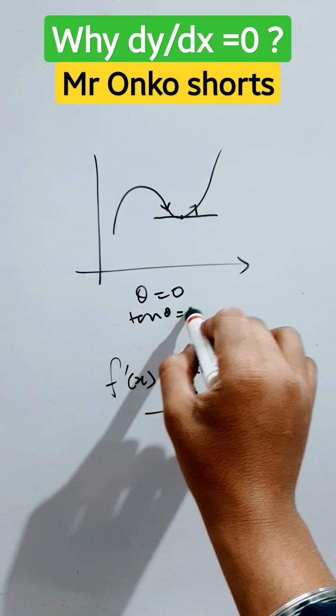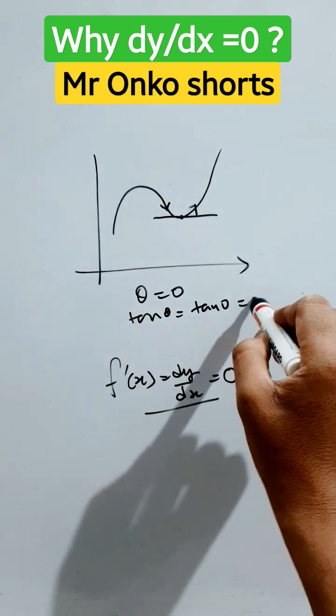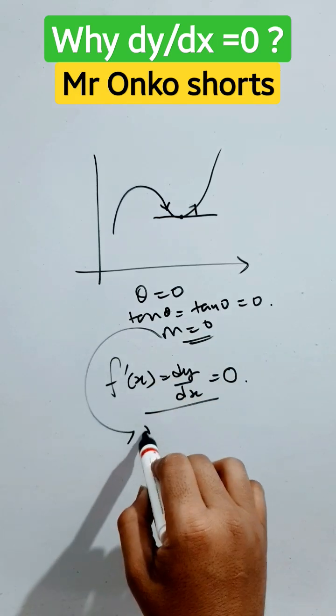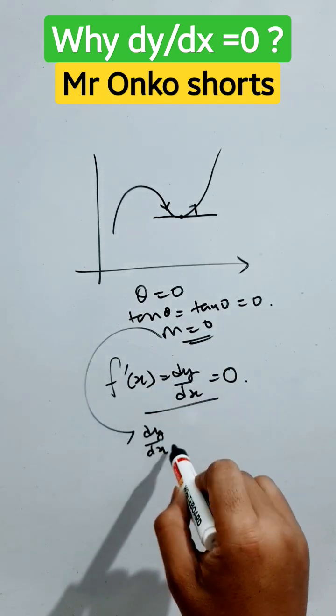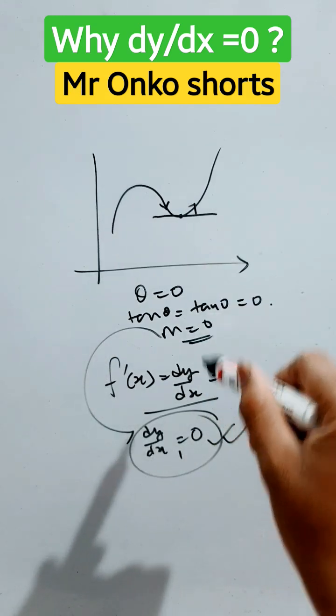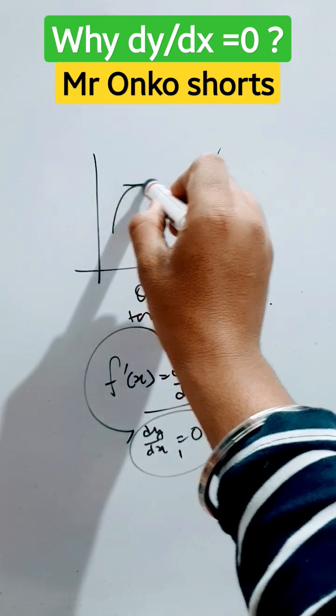So tan theta will be tan 0 equals to 0, so m equals 0. So m is nothing but the slope dy/dx of the tangent that equals 0. So that's why the first derivative becomes 0 to find the max or min value. Here it is the max value.